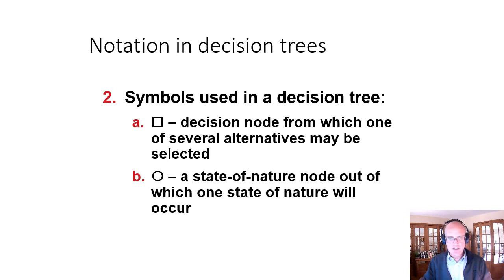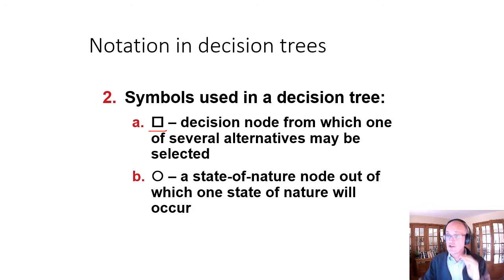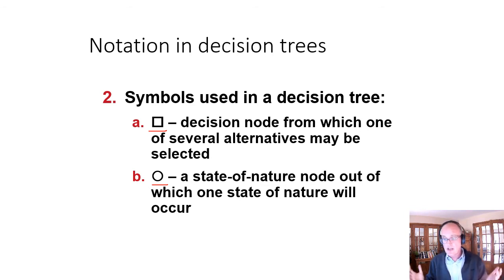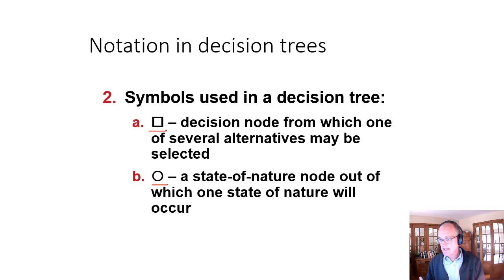Reiterating the notation in decision trees: if we have a square, we have a decision and can choose one branch or another. If we have a circle, we have a state of nature or an uncertain outcome. In that circumstance, we can't make a choice — we can't choose a favorable market or an unfavorable market. We have different probabilities associated with those outcomes, so we develop an expected value and then go back to the decision node.